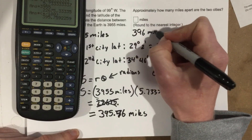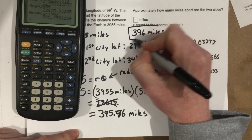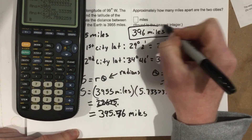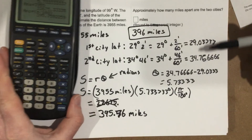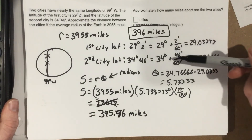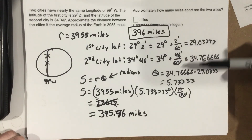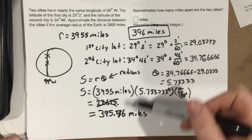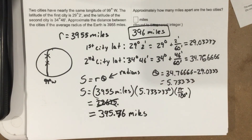Rounding to the nearest integer, that's 396 miles. So to summarize: convert your angles from degrees-minutes to decimal degrees, find the angle difference between the cities, use S equals R theta — making sure you convert to radians — and there you have it. Thank you.